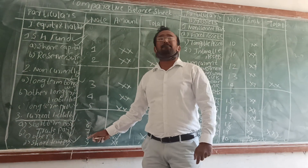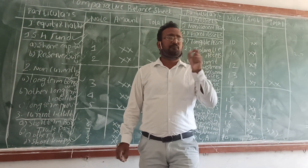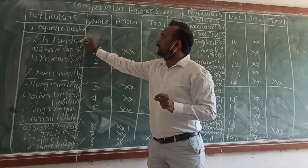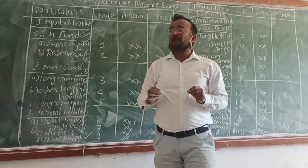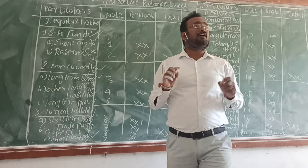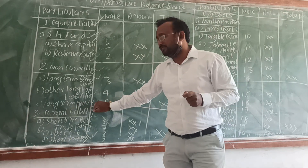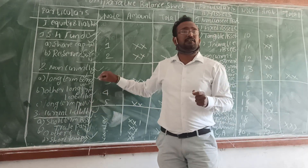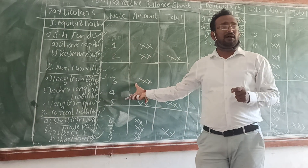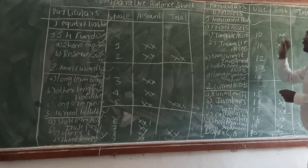So total A plus B plus C is called liability. What is A plus B plus C? A is shareholders fund, B is non-current liability, and C is current liability. So this is the liability part. Now move on to the asset part.